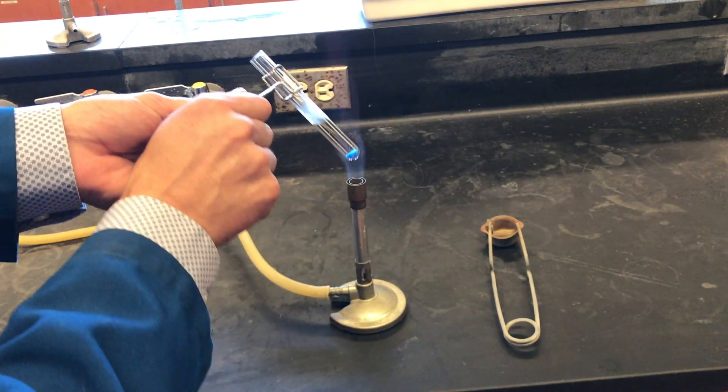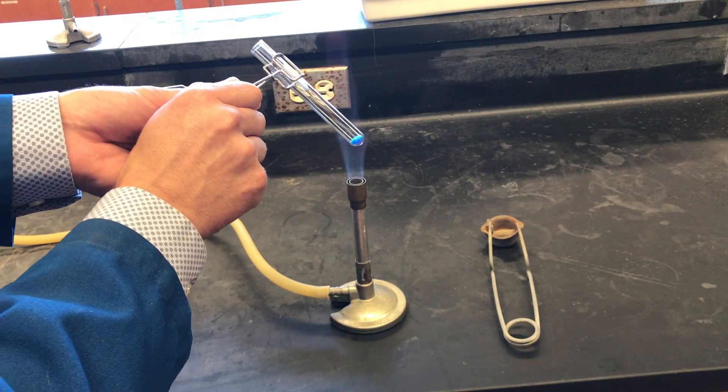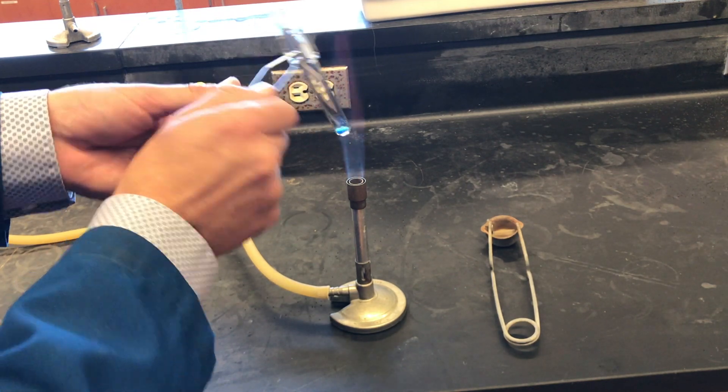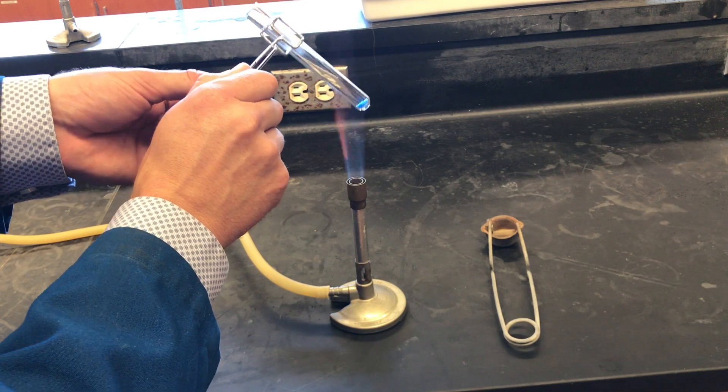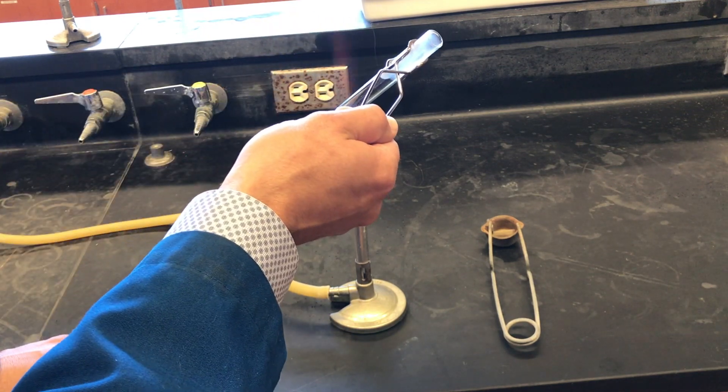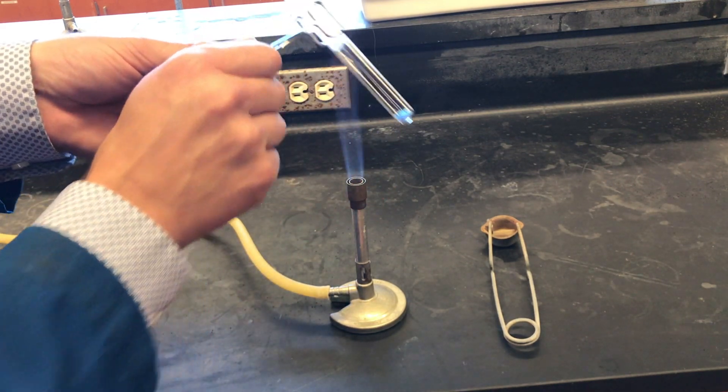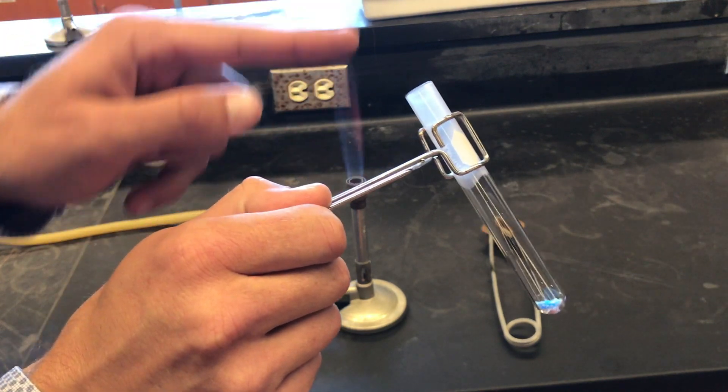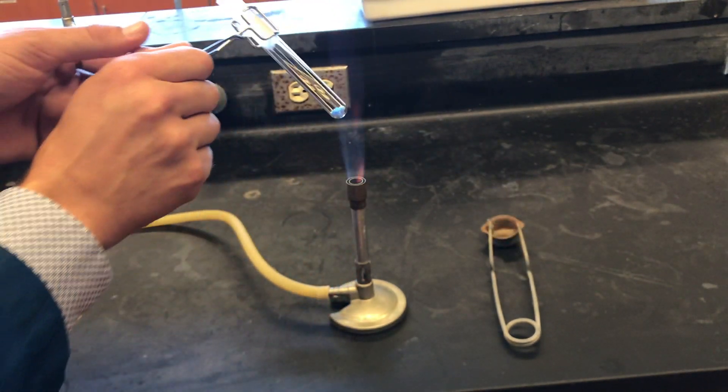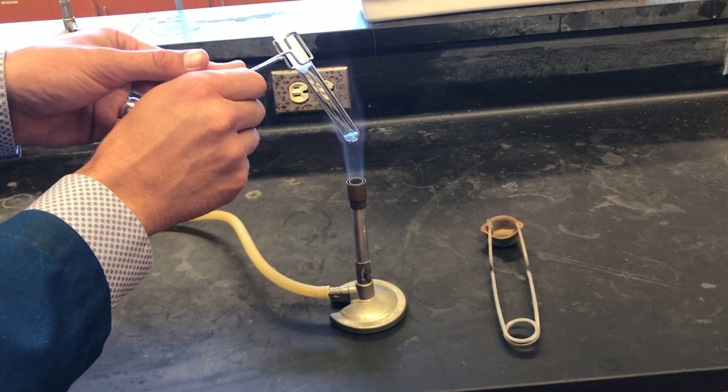We're going to heat our material in the test tube, holding it at a 45 degree angle and making sure that the open end is not pointed towards anybody, including ourselves. We can see liquid starting to form at the top of the test tube as we continue to heat it.